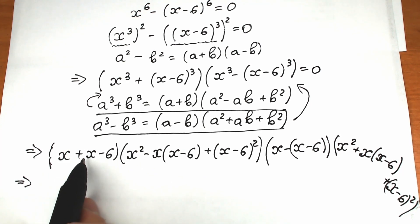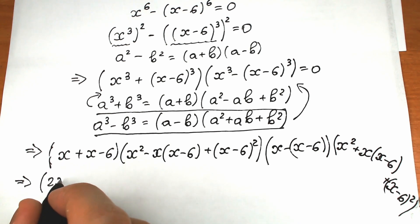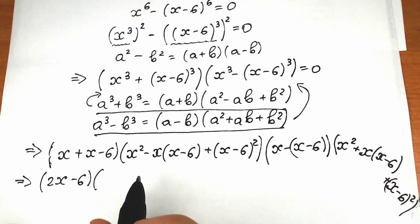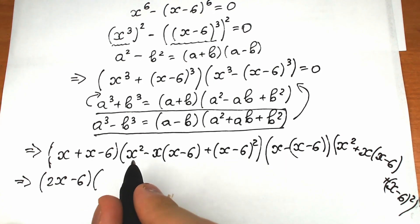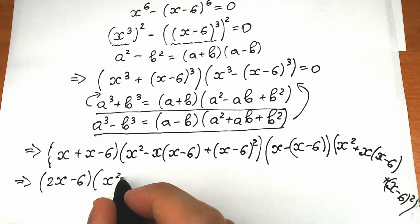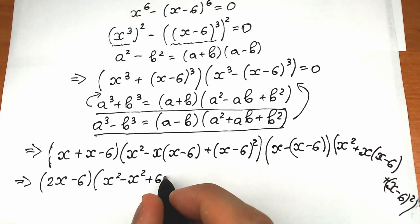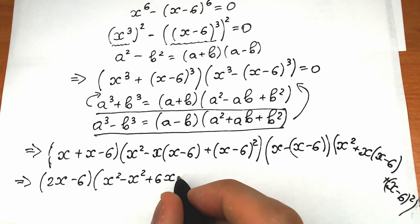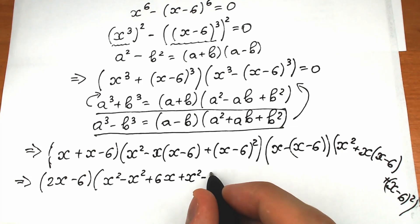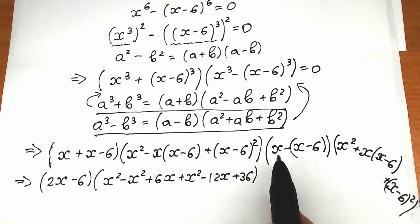Let's simplify. In the first part, x plus x minus six simplifies to two x minus six. In the second parenthesis, expanding x times x minus six gives x squared minus six x, and x minus six squared gives x squared minus twelve x plus thirty-six. So the middle term collects as x squared minus x squared plus six x plus x squared minus twelve x, which simplifies.